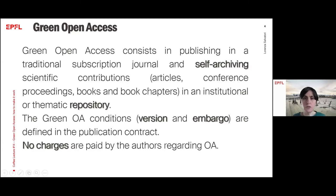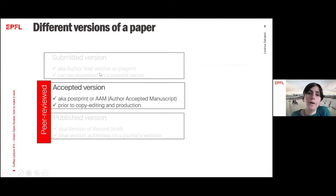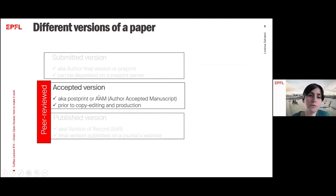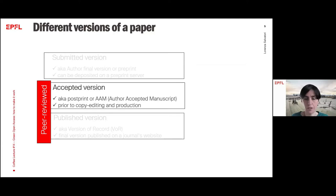I would like to clarify a few terms linked to the different versions of a paper. There is the submitted version — the author's final version or pre-print, which is not peer-reviewed. Then there are two peer-reviewed versions: the published version, also called the version of record, which is the article you find on the journal website; and the accepted version, also known as post-print or author accepted manuscript — the peer-reviewed version prior to copy editing and production. This is usually the version you're allowed to upload in a repository according to publisher policies.